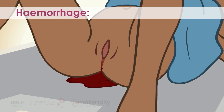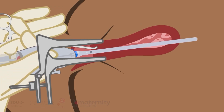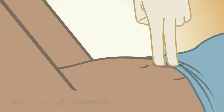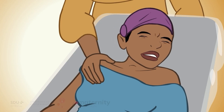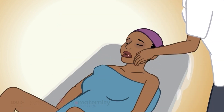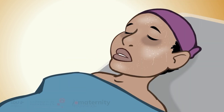Hemorrhage can result from retained products of conception, perforation, trauma or damage to the cervix, and rarely uterine perforation. Perforation can happen at surgical abortion — it is often uncomplicated but might cause severe complications that need emergency surgery, such as intra-abdominal bleeding, defense and signs of shock, or organ perforation to the bladder or intestine. In the latter case, it will lead to peritonitis, fever, signs of sepsis, and abdominal defense.